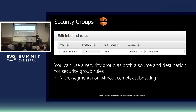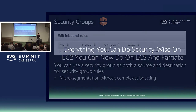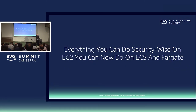With security groups, you can reference one layer in another layer. For example, you can have the application layer referenced in the database layer security group. So if anything scales horizontally during the day, you don't need to hard-code IPs or subnets because one layer is aware of the other. Anything we can do security-wise on EC2, we can now do on ECS and ECS with Fargate.